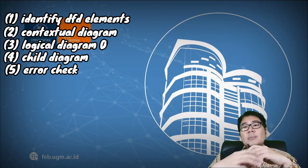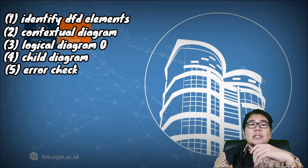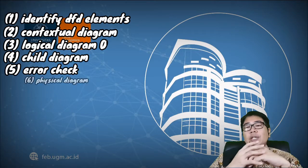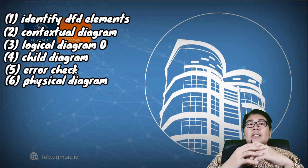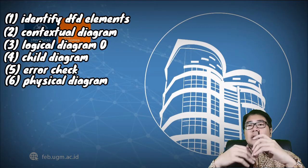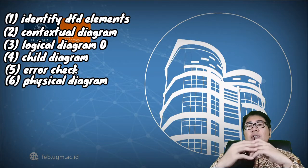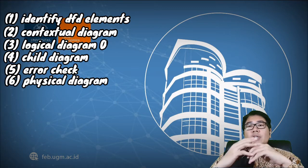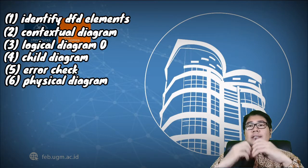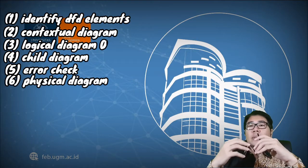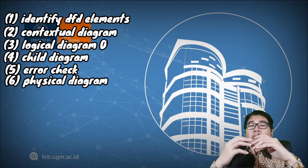After we finish with the error checking, the next step is to create a physical data flow diagram. A physical data flow diagram is very different from the logical data flow diagram. A logical data flow diagram shows a concept of a business process, while the physical data flow diagram shows the real activities inside a business process.